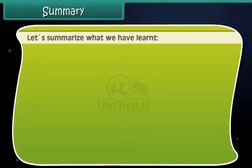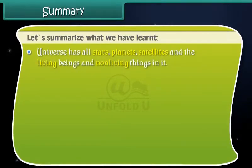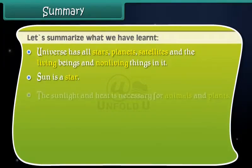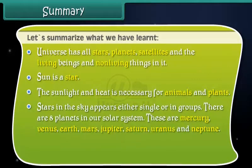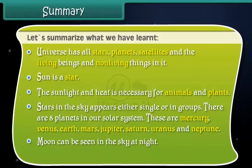Now let's summarize what we have learned. The universe has all stars, planets, satellites, and living and non-living things in it. The Sun is a star, and sunlight and heat are necessary for animals and plants. Stars appear either single or in groups. There are eight planets in our solar system: Mercury, Venus, Earth, Mars, Jupiter, Saturn, Uranus, and Neptune. The moon can be seen at night and appears to change its shape every night.